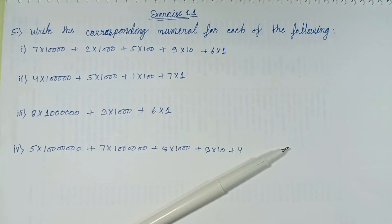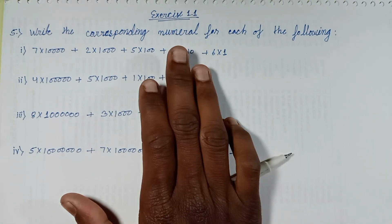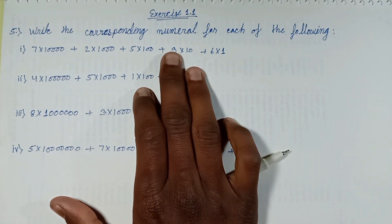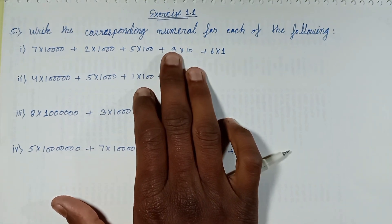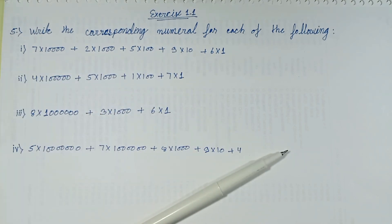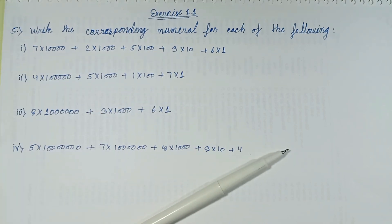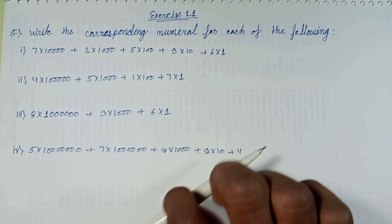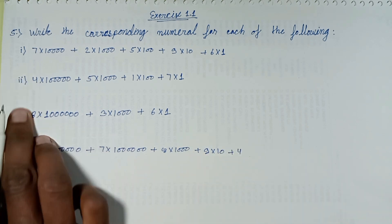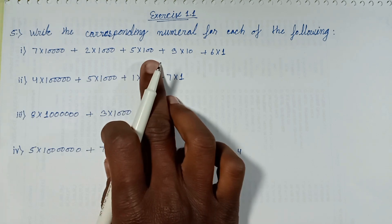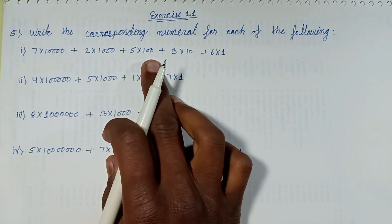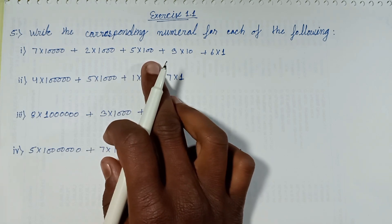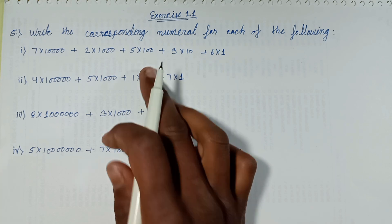Bande Matram everyone, welcome back to a new episode. This episode discusses Exercise 1.1, Question number 5: Write the corresponding numeral for each of the following. These given numbers are written in expanded form. Let's solve them one by one.